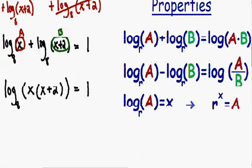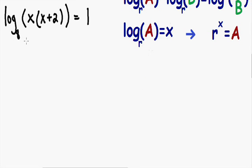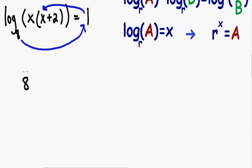Our next step is to change this log equation into an exponential equation. I like to use a simple method with counterclockwise arrows. We start with the base of 8 and draw a counterclockwise arrow to the 1, then from the 1 we draw another counterclockwise arrow to the inside of our parentheses, which is x times (x + 2). Following these arrows: 8 to the power of 1 equals x times (x + 2). So we have changed this log equation into an exponential equation.